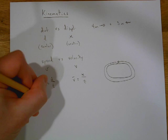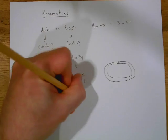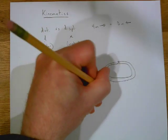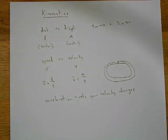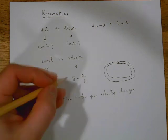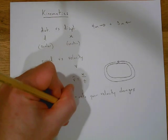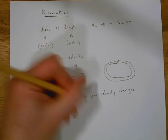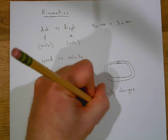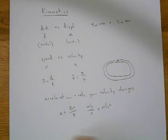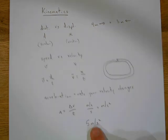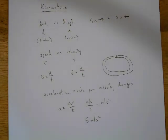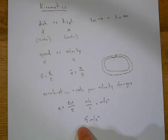A really important term from this unit was acceleration. Acceleration is the rate your velocity changes. Think of it this way: my sweet car goes from zero to 60 miles per hour — but how much time does it take? That's why acceleration is your change in velocity over time. Your units are going to be meters per second per second, or meters per second squared. So if you have an acceleration of 5 meters per second squared, every second your velocity is going to increase by 5 meters per second in the positive direction.